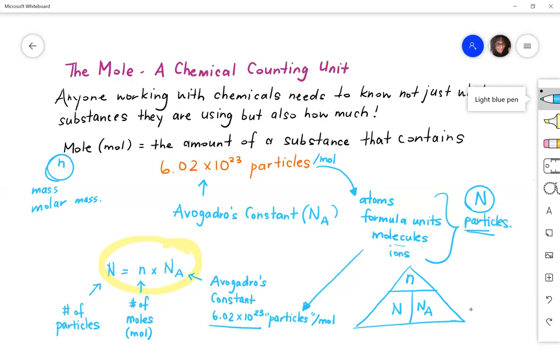And that if you want to figure out what your n is, you would take N divided by Na. Vice versa, to figure out Avogadro's, you would take the number of moles, divided by the number of particles. So this is also the triangle method.